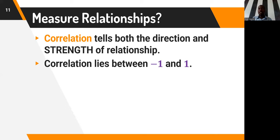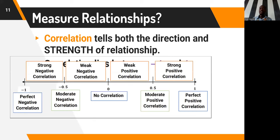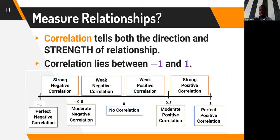In the formula, COV(X,Y) represents the covariance of x and y, S subscript x is the standard deviation of x, and S subscript y is the standard deviation of y. The correlation coefficient lies between negative one and one, inclusive. A coefficient of negative one means perfect negative correlation, positive one means perfect positive correlation, and zero means no relationship whatsoever.